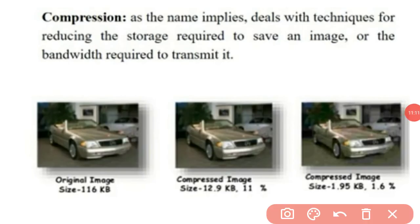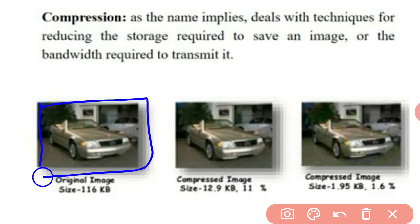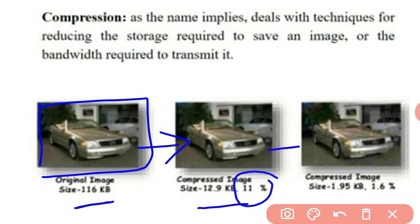Image compression deals with techniques for reducing the storage required to save an image or the bandwidth required to transmit it. For example, an initial image of size 116 kilobytes, after compression, becomes 12.9 kilobytes — about 11% of the original. Further compression reduces it to 1.95 kilobytes, which is 1.6% of the original size.